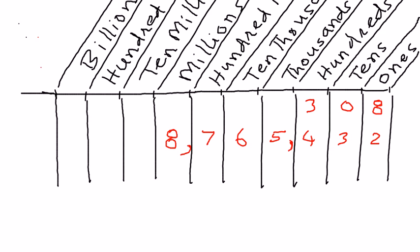Let's say we have a number like this. Let me write it down here: zero, zero, zero, then zero, zero, eight, and then we have a six. The first zero is in the ones place, the second zero is in the tens place, the third zero is in the hundreds place, the fourth zero is in the thousands place, the fifth zero is in the ten thousands place, the eight is in the hundred thousands place, and the six is in the millions place.